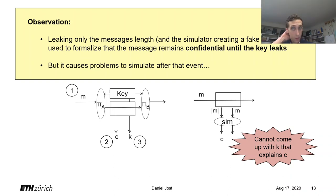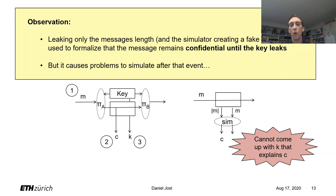In particular we can observe that we don't have any problem to simulate until the key is exposed, and we don't have any problem afterwards — it's just that we cannot simulate past this event. Yet giving the simulator only the message length to begin with and asking it to produce a fake ciphertext is essentially only a proxy to formalize the confidentiality until this event.